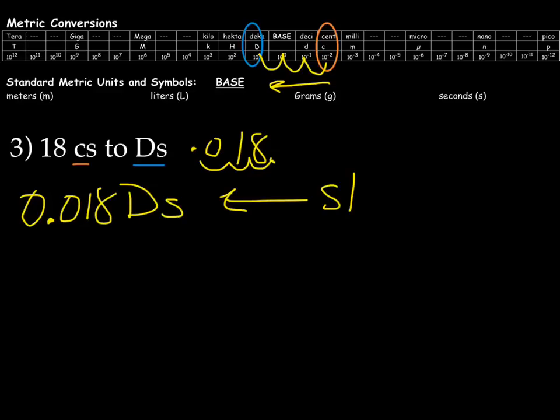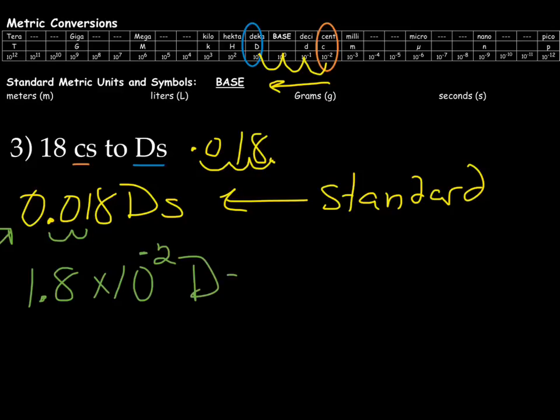And for scientific notation, again, there needs to be one numeral or one digit before the decimal. So it's going to be 1.8 times 10 to the 2. And this number here is smaller than 1. It's a small number, which means it's negative. So we have 1.8 times 10 to the negative 2 deca seconds. And that is our scientific notation. All right, there you go. That's it for today.